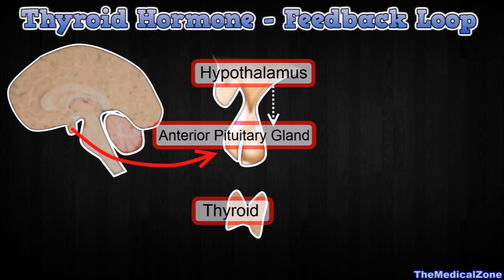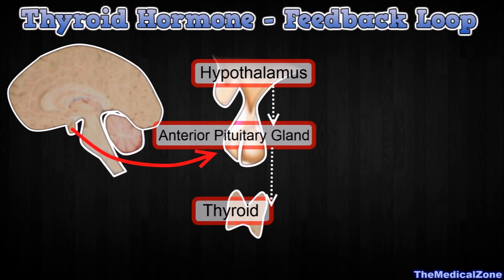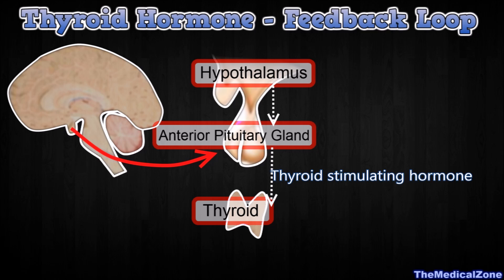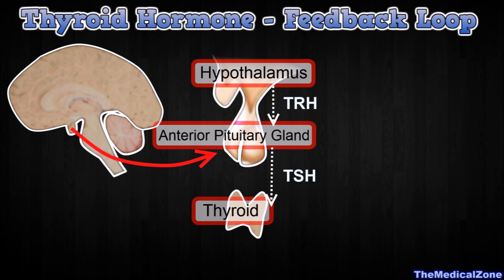The hypothalamus secretes a hormone called Thyrotropin-Releasing Hormone, which in turn stimulates the pituitary gland to produce Thyroid-Stimulating Hormone. We will abbreviate these with TRH and TSH.